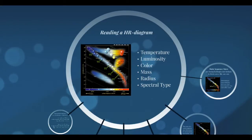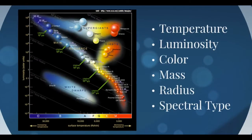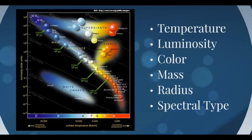How do you read an HR diagram? From an HR diagram, you can extract the temperature of a star, its luminosity, its color, its mass, its radius, and its spectral type. That is a lot of information from a single plot, which is why these HR diagrams are so important and very useful.